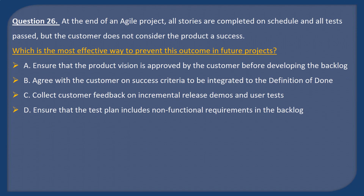Question 26. At the end of an Agile project, all stories are completed on schedule and all tests passed, but the customer does not consider the product a success. Which is the most effective way to prevent this outcome in future projects? A: Ensure that the product vision is approved by the customer before developing the backlog. B: Agree with the customer on success criteria to be integrated into the definition of done. C: Collect customer feedback on incremental release demos and user tests. D: Ensure that the test plan includes non-functional requirements in the backlog.